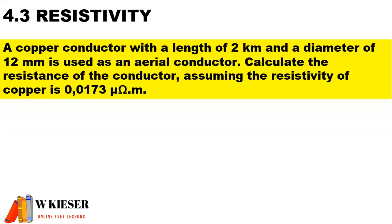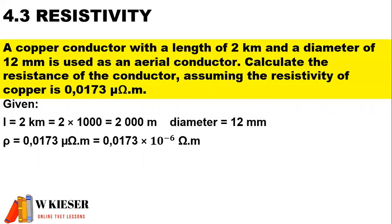In our example for resistivity, a copper conductor with a length of 2 kilometers and a diameter of 12 millimeters is used as an aerial conductor. Calculate the resistance of the conductor, assuming that the resistivity of copper is 0.0173 micro-ohm meters. The length is 2 kilometers, so to convert kilometers into meters we multiply by 1,000 — therefore the length is 2,000 meters. The diameter is 12 millimeters, so we still need to work out the cross-sectional area. The resistivity is 0.0173 micro-ohm meters, and to convert micro-ohm meters into ohm meters we multiply by 10 to the power of minus 6.